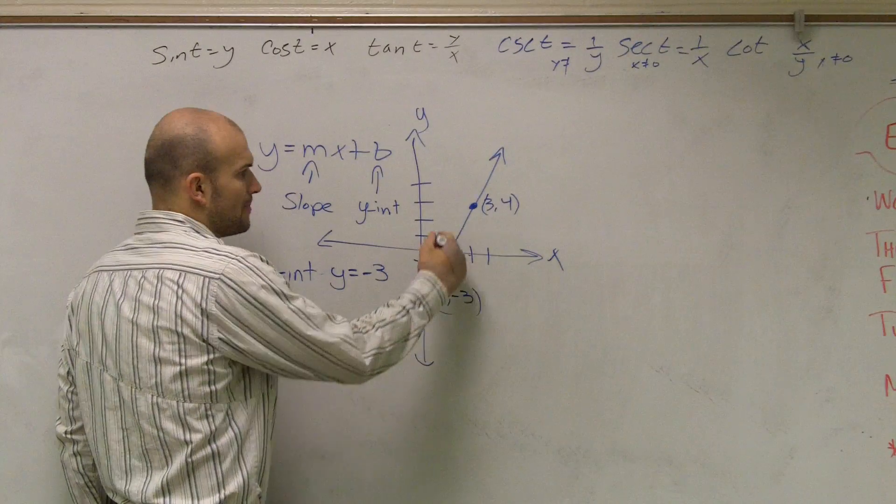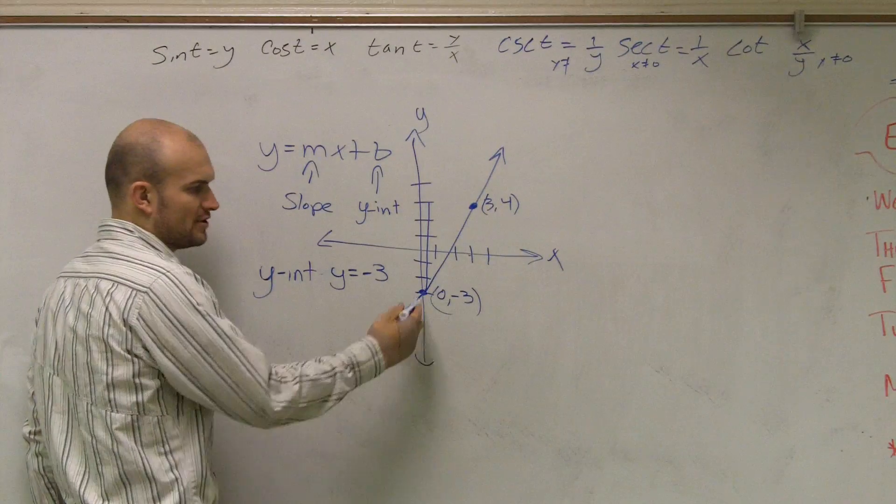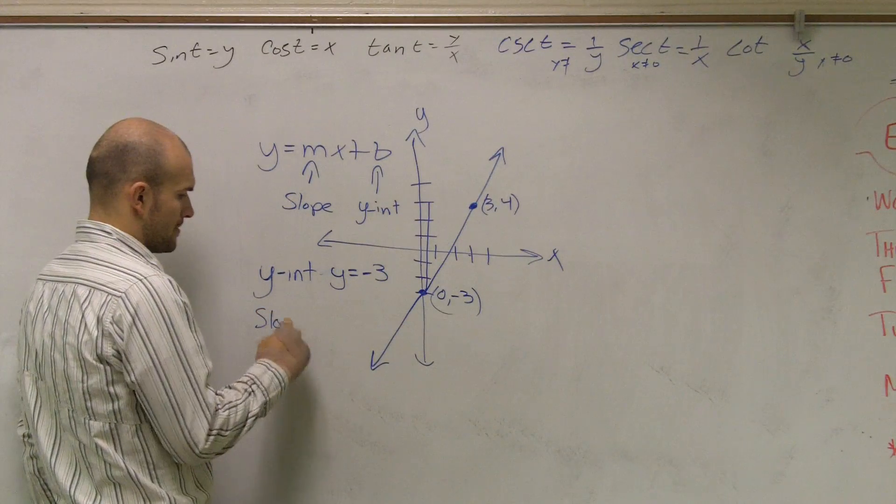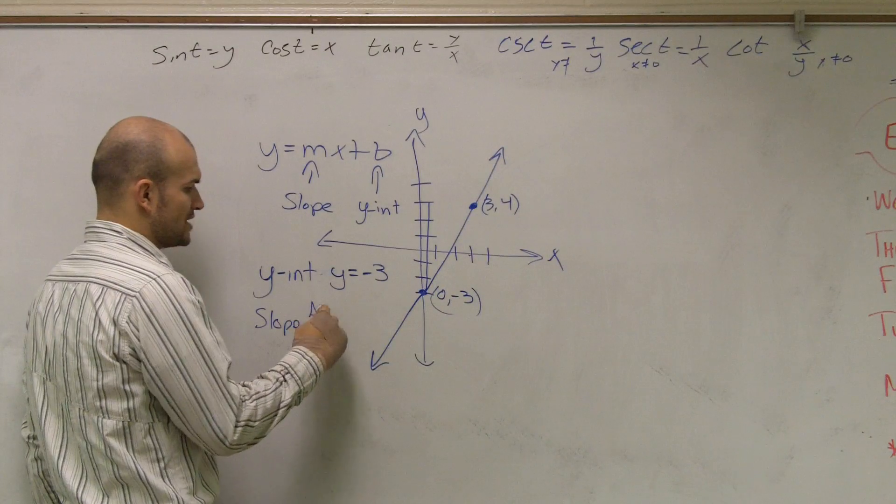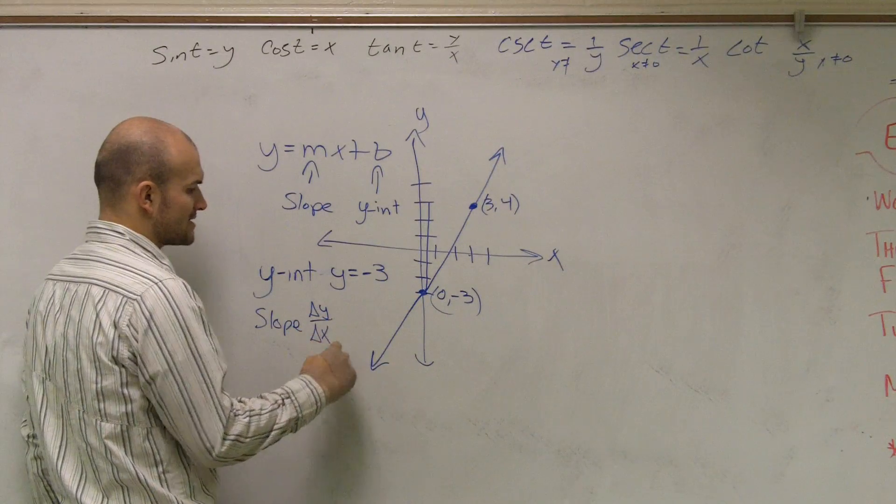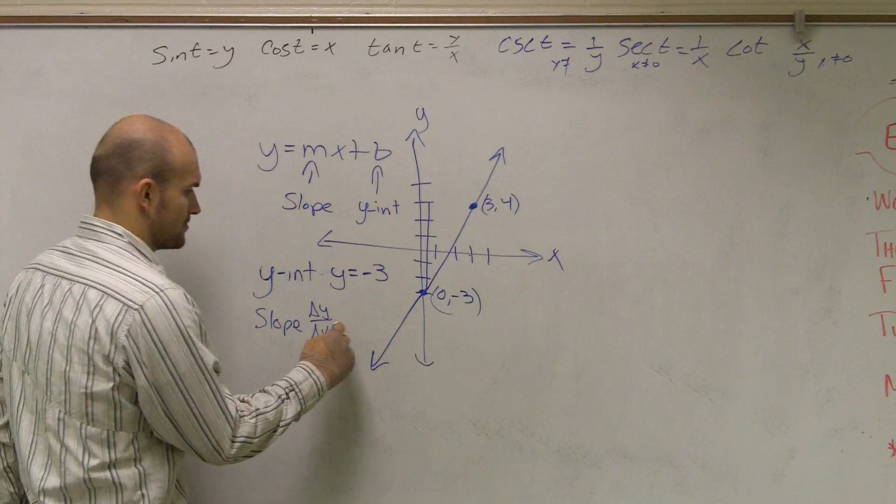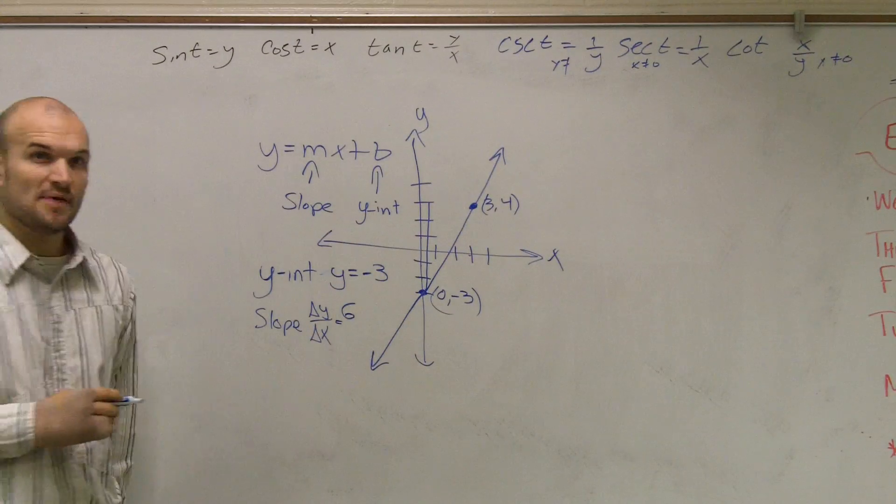how far do I need to go up to get to my next point? You could say, 1, 2, 3, 4, 5, 6. So remember, slope is your change in y over change in x. So therefore, to get from one point to the next, I had to go up 6. So I went up 6.